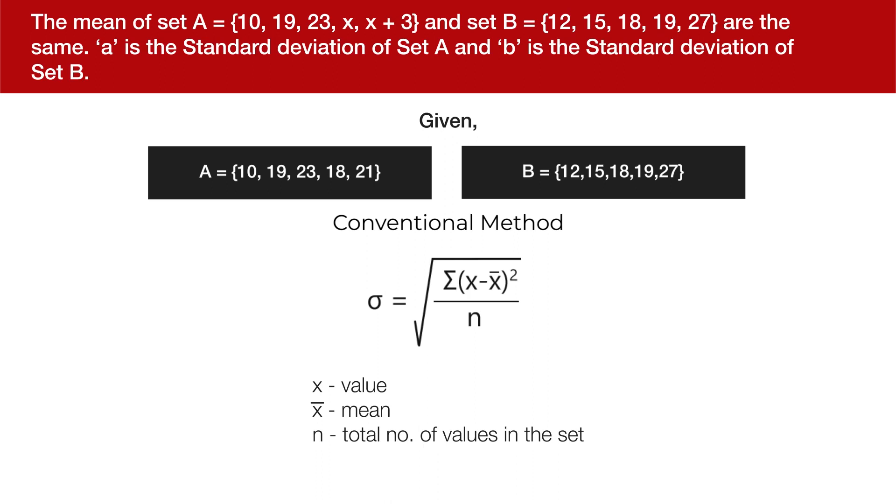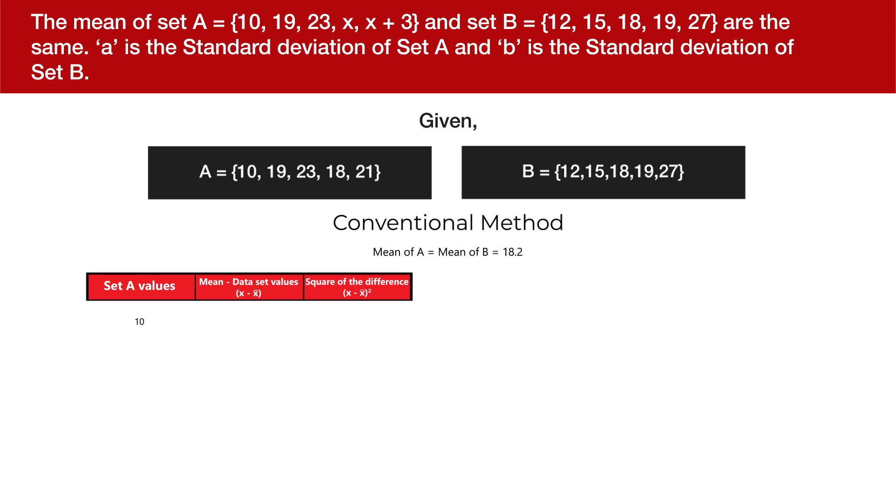Let's take one of the data set for an example which is 10. When you subtract it from the mean you get 8.2 and you square it, it's 67.24. Repeat the same process for all the values in each set.